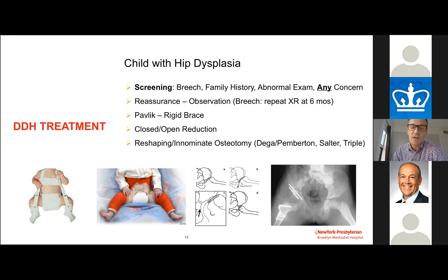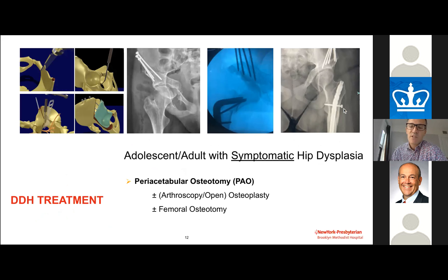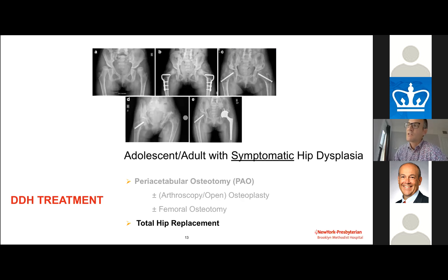Initial treatment in young children ranges from the Pavlik harness up to rigid braces. If initial treatment doesn't work, we move on to closed or open reductions, and eventually a variety of osteotomies are available. In the adolescent or adult with symptomatic hip dysplasia, we have two primary treatment options: the periacetabular osteotomy, which reorients the entire acetabulum to optimize loading, or once cartilage degeneration is too advanced, a total hip replacement.